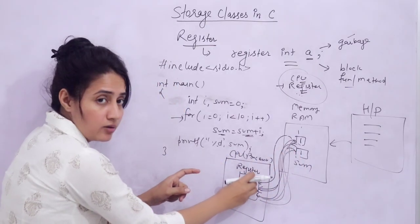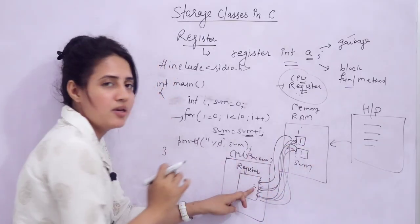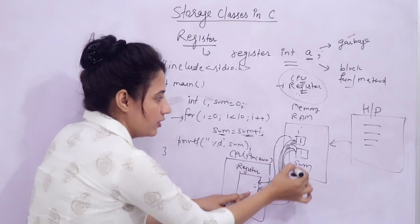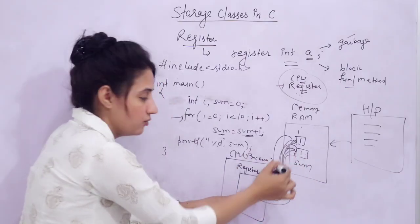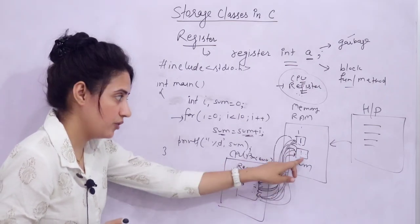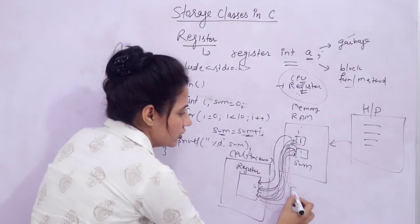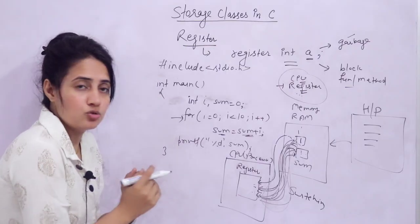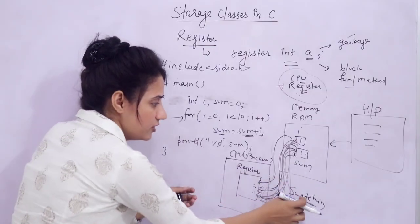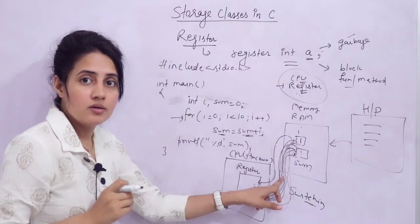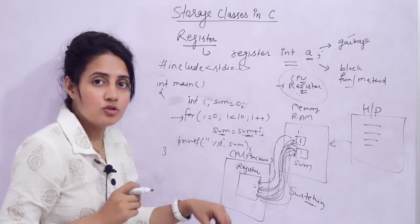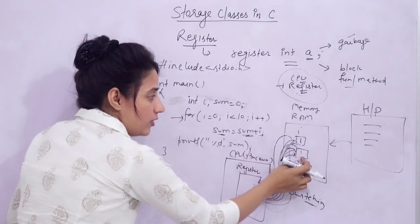So processing happens in the register, but values are stored in memory. We are constantly switching — fetching data from RAM into register, doing processing, then storing back to RAM for the next instruction. This switching takes time. The processing itself is fast, but this switching is increasing running time and decreasing efficiency of the program.